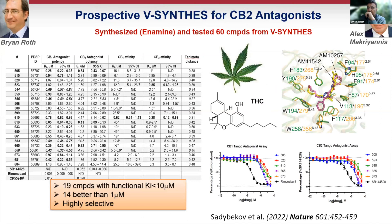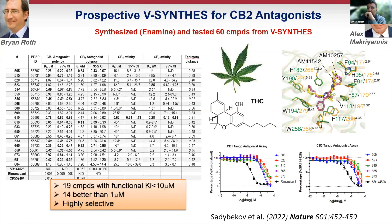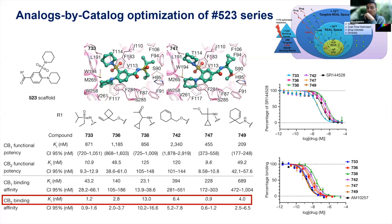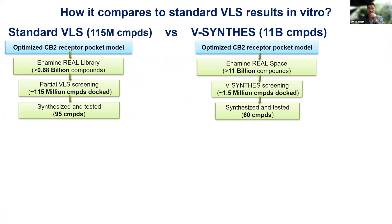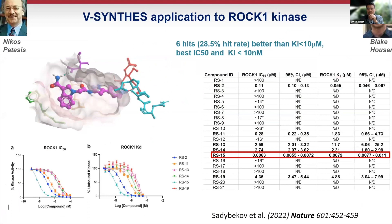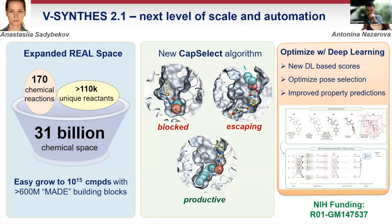This was applied to cannabinoid receptors. We found a lot of sub-micromolar hits from the first run, and they were optimized to sub-nanomolar hits after the first SAR by catalog, staying in the same on-demand space or just ordering compounds from Enamine. Compared to standard virtual library screening of a diversity subset of the REAL library, VSynthes was 70 times faster, six times better, and led to better compounds. It was also tested on kinases, giving single-digit nanomolar compounds.